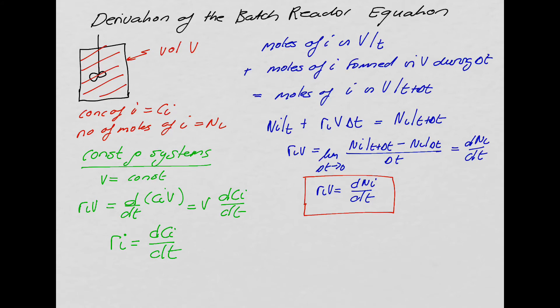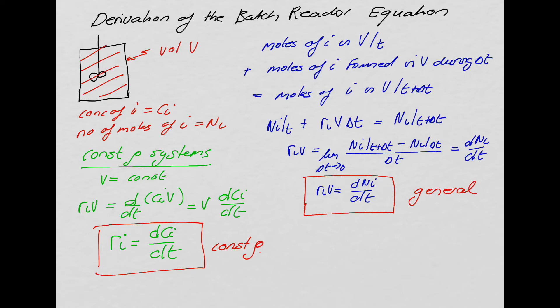I'm going to mark this: dCi/dt = ri is only true for constant density systems, while dNi/dt = ri·V is true in general.